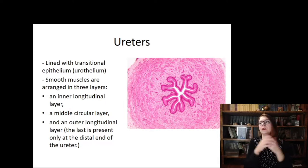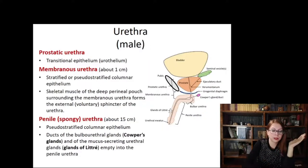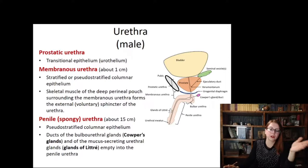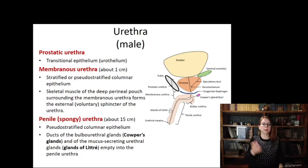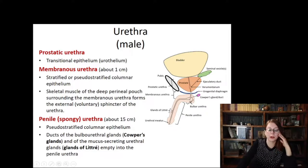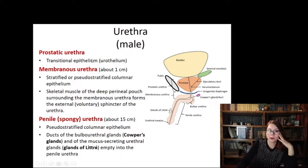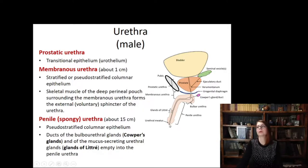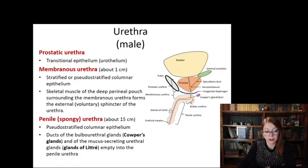In the lower part of the ureter, an additional outer longitudinal layer may also be present. In the urinary bladder, smooth muscles are not separated into distinct layers but form the so-called detrusor muscle, with the same urothelium lining it. The urethra differs between males and females. In males it has three parts: prostatic, membranous, and penile/spongy urethra, each lined with different epithelium — the prostatic portion with transitional epithelium, then pseudostratified columnar epithelium, and finally stratified squamous epithelium both keratinized and non-keratinized.